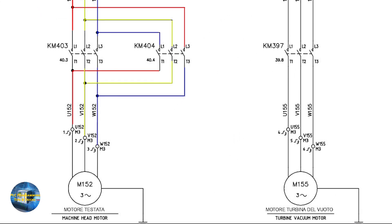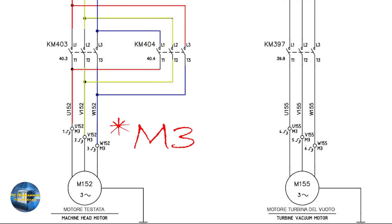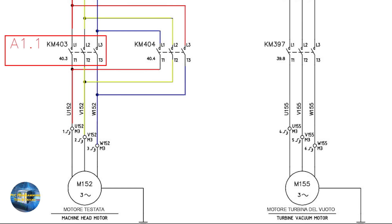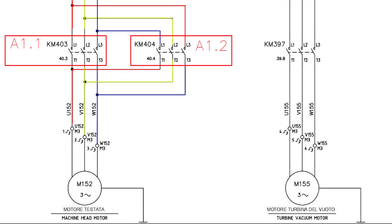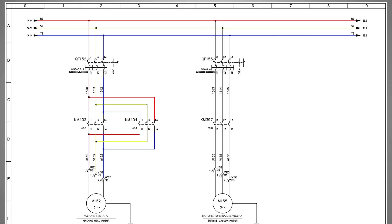The output side contacts are looped together to make a single three-phase output. This supply then connects to the three-phase motor, with the three output wires connected at terminal strips U152, V152, and W152 on DIN rail M6. KM403 contactor turns on with PLC output A1.1 and the motor runs in the forward direction. KM404 contactor turns on with PLC output A1.2 and the motor runs in the reverse direction. This is how to read the diagram for PLC digital outputs.